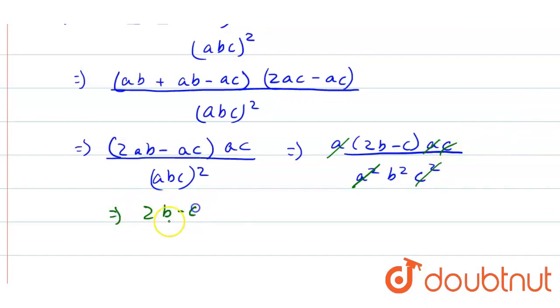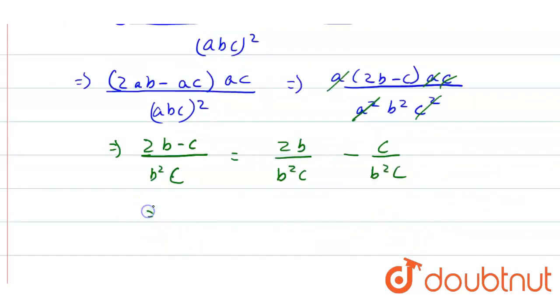Equals 2B by B²C minus C by B²C. So the final value will be 2 by BC minus 1 by B². So this will be our answer.